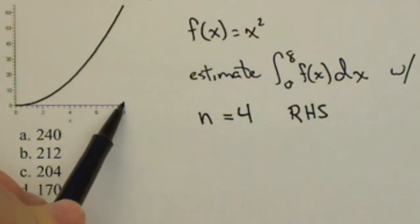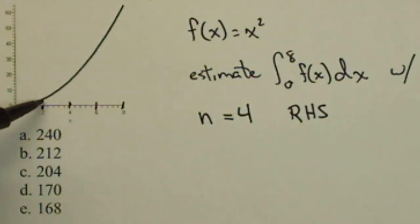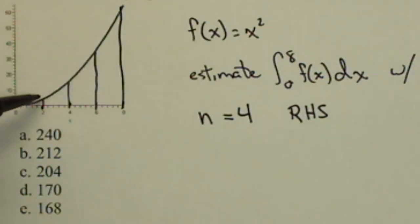So that means we need to break our interval up into four equal spaces. And we're using a right-hand rule, so once this is broken into four, remember that means the top of the rectangles are made with the right-hand.